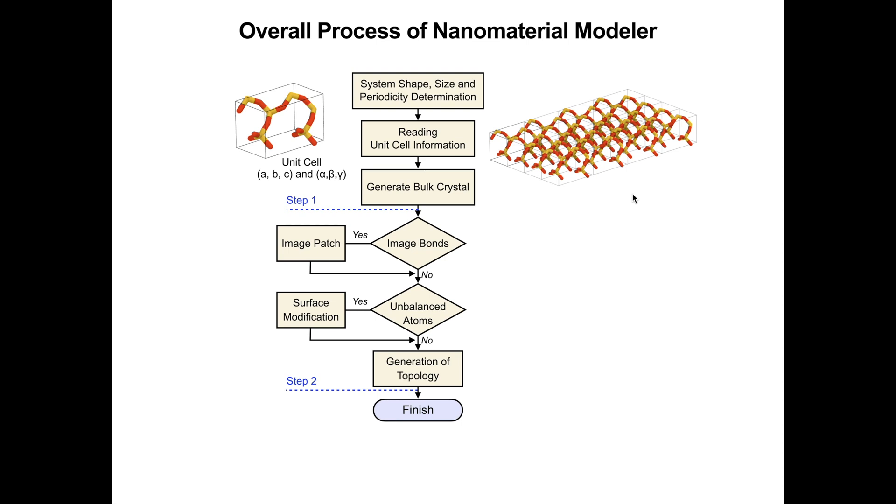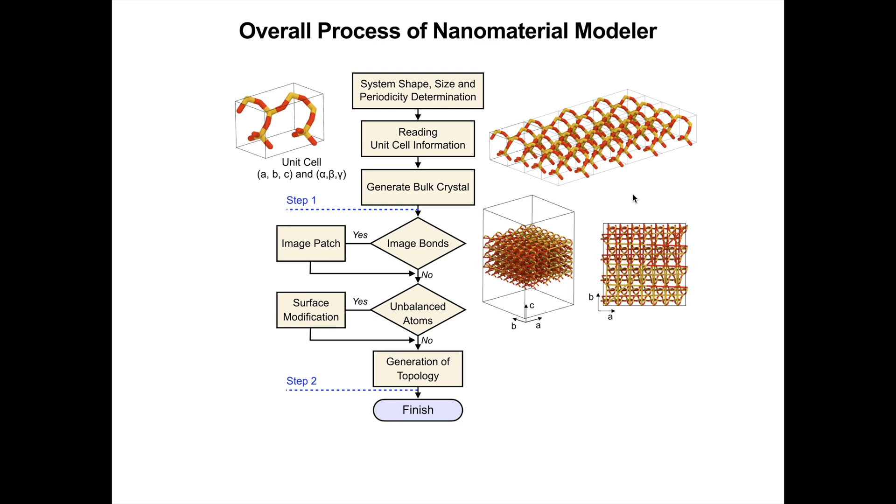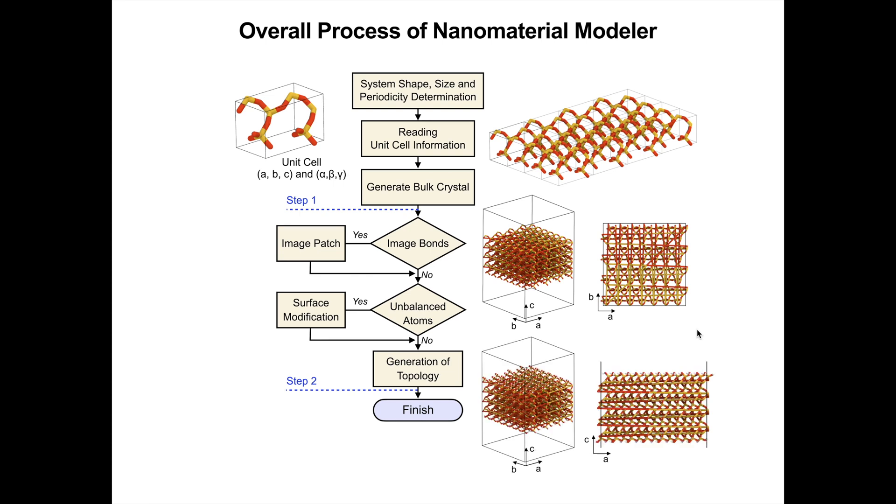In step 2, image bonds are formed between the primary and periodic images of certain nanomaterials along their periodic dimensions. Next, any unbalanced atoms are corrected with surface modifications.